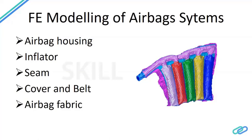The inflator is the device that pushes air into the airbag using a chemical inflation mechanism. It can be modeled as a rigid component, and the airbag is tied to it and inflates from it. The seam is the portion where the airbag is stitched and has more leakage compared to the top layer of the airbag fabric. It is important to model the seam as a separate component with different leakage parameters.